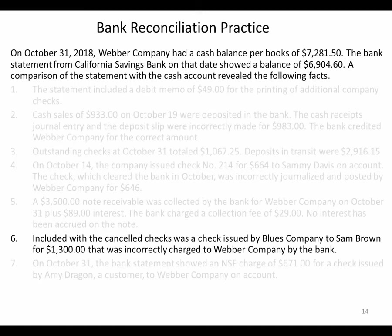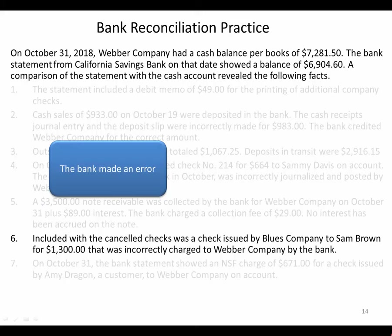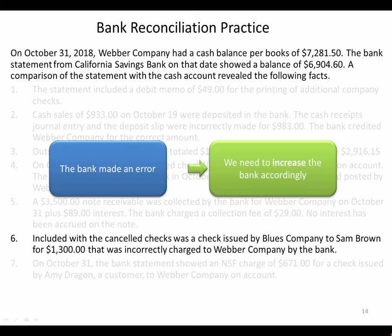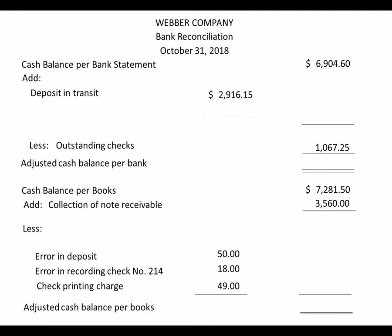Number six: included with the canceled checks was a check issued by Blue's Company to Sam Brown for $1,300 that was incorrectly charged to Weber Company by the bank. Blue's Company wrote a check and California Savings Bank accidentally took the money out of our account instead of Blue's Company's account. The bank made an error and took money out of our account when they shouldn't have, so we're going to increase the bank side of our bank reconciliation. We add back that $1,300 because we'll contact the bank and they'll return the money.